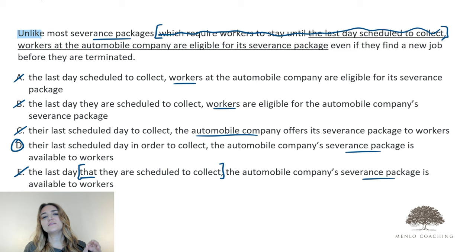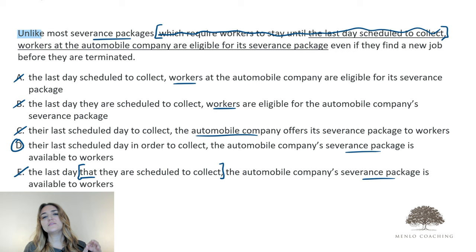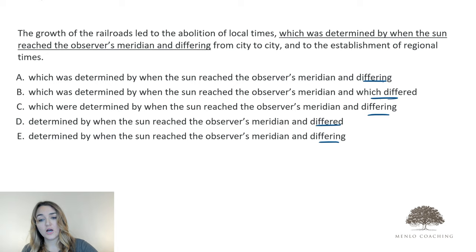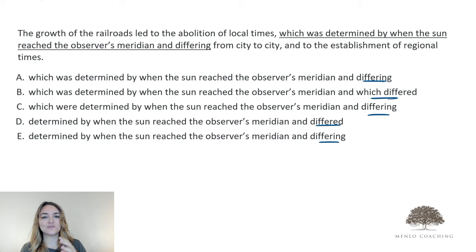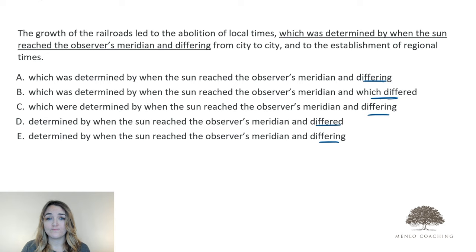Now, let's take a look at one more example that reinforces what we saw here. In this next example, we're going to get a little bit more technical into the grammar of sentence correction, but not a lot more technical. If we look to our answer options, we can see a pretty clear and obvious initial difference. We're offered 'differing' versus 'which differed' across our answer options toward the end of the underlined portion. And without getting too in the weeds on grammatical terminology, you're never going to have a question ask you whether we're looking at a participial phrase or a relative clause. We still need to know how they work. And so we can see here that both of the two modifiers that appear in this underlined portion are meant to refer back and describe the same thing: local times.